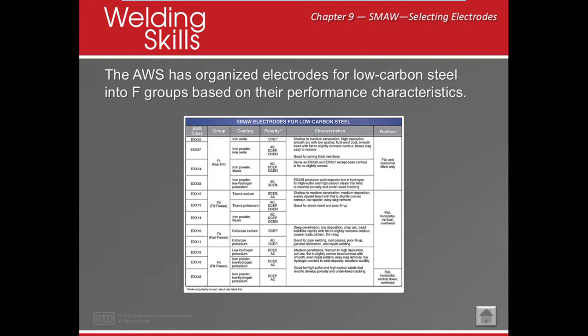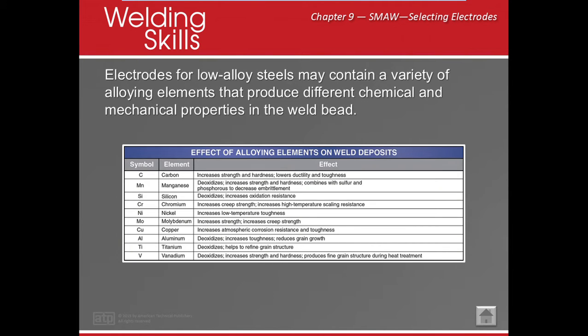All right guys, we're back. We were talking about different types of electrodes, different types of F groups. Now the next thing we need to talk about is how different alloying elements — things that are added — help the mechanical properties of our material.